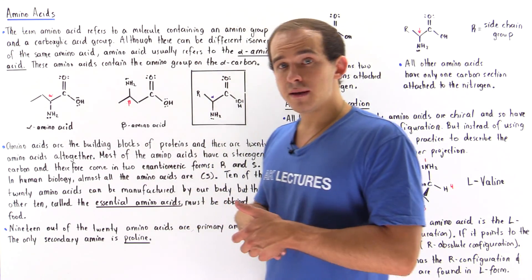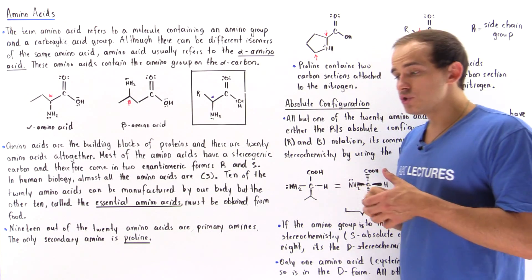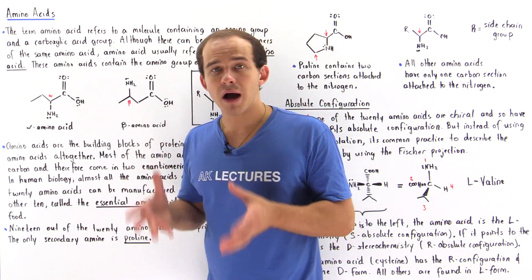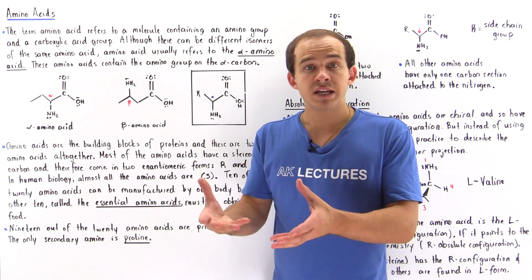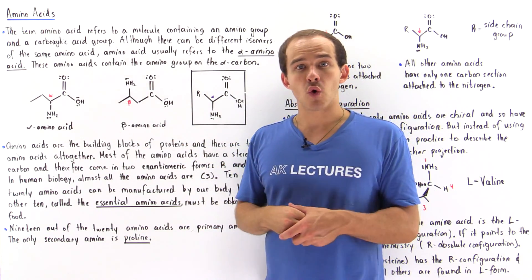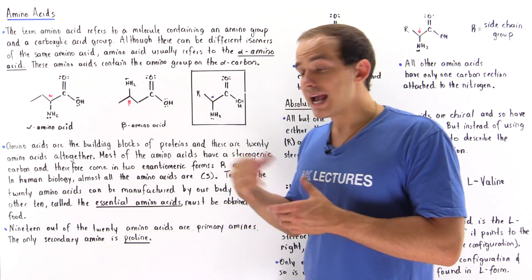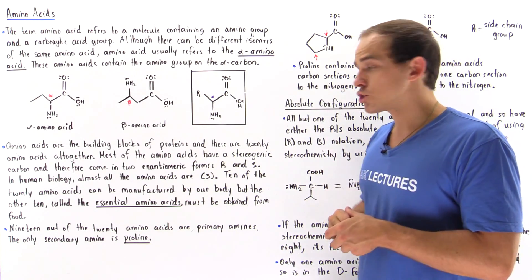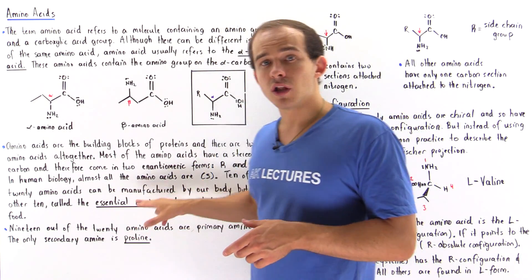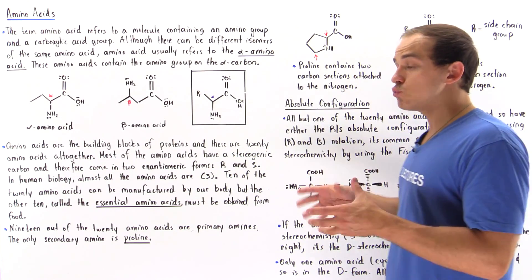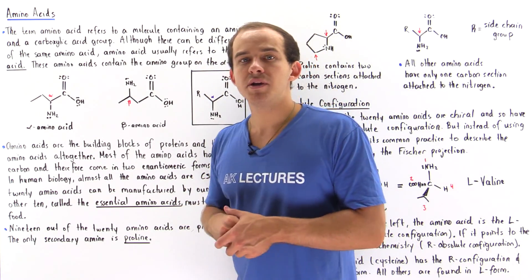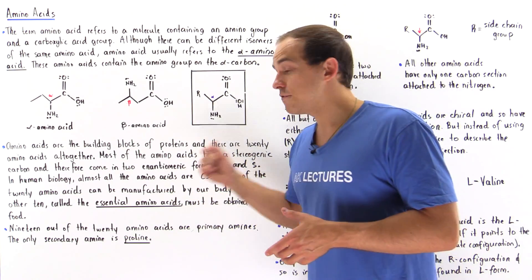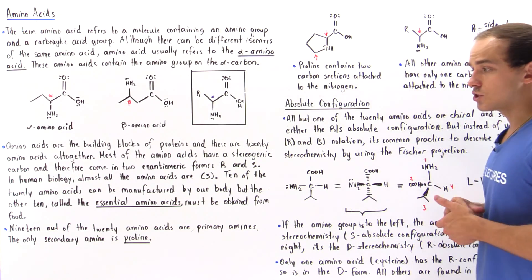Ten of the 20 amino acids used to make proteins are manufactured inside our body, but the other 10 must be obtained from food. These 10 amino acids that our body cannot manufacture are known as essential amino acids. They are called essential because we need all 20 amino acids to survive, and if we don't obtain any one of these 10 essential amino acids, we will essentially die.